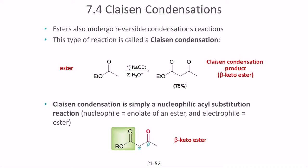Welcome to lecture 2. Let's start with Claisen condensation reactions. Claisen condensation reactions basically involve esters that we can use to condense the structure. Esters undergo reversible condensation reactions, and this type of reaction is what we call a Claisen condensation.